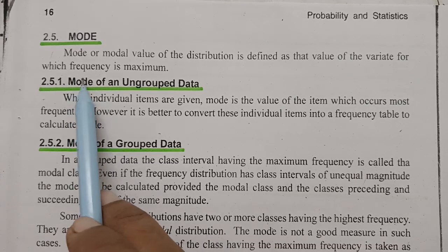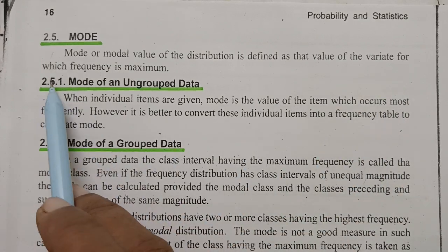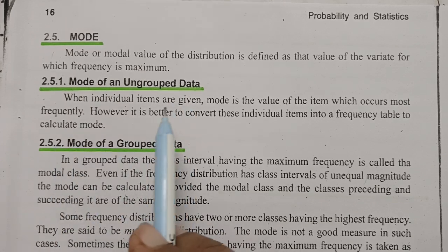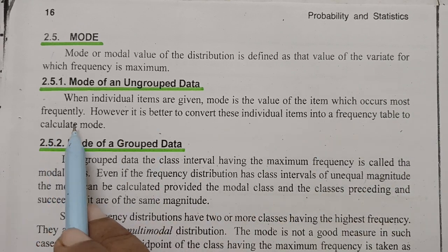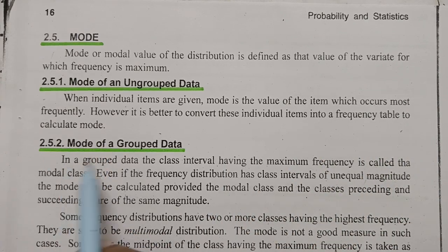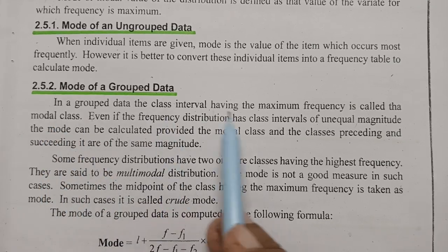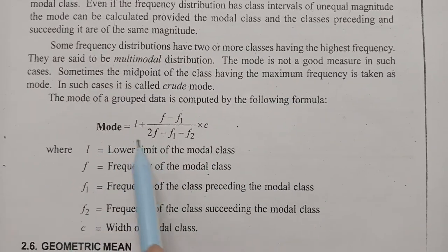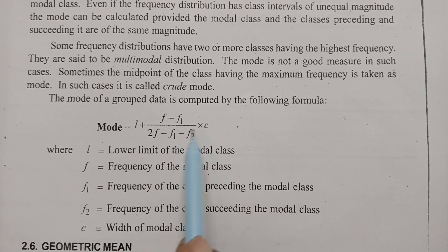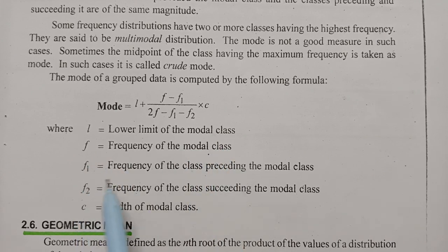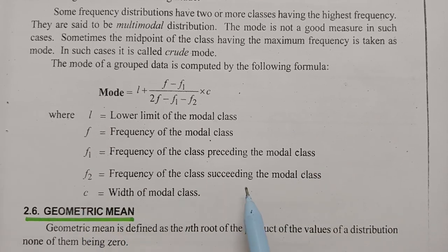The next measure is the mode. The mode or modal value of a distribution is defined as the value of the variate for which the frequency is maximum. For ungrouped data, the mode is the value of the item which occurs most frequently; it is better to convert individual terms into a frequency table to calculate the mode. For grouped data, the class interval having maximum frequency is called the modal class, and mode = L + [(F − F1) / (2F − F1 − F2)] × C, where L is the lower limit of the modal class, F is the frequency of the modal class, F1 is the frequency of the preceding class, F2 is the frequency of the succeeding class, and C is the width of the modal class.